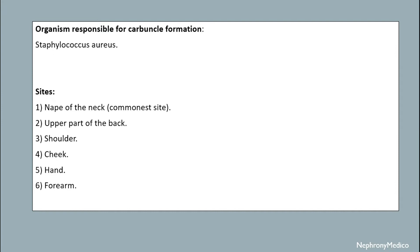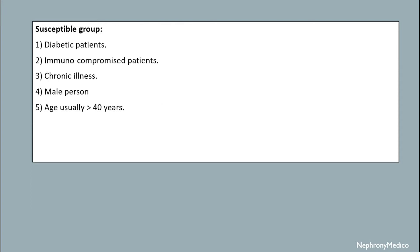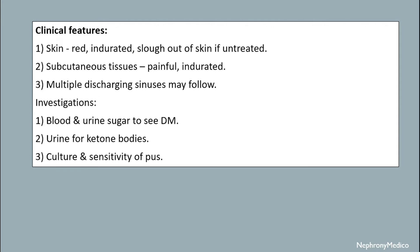The sites of carbuncle formation are: the nape of the neck, which is the most common site, the upper part of the back, shoulder, cheek, hand, and forearm. Susceptible groups include diabetic patients, immunocompromised patients, patients with chronic illness, male persons, and persons aged more than 40 years.